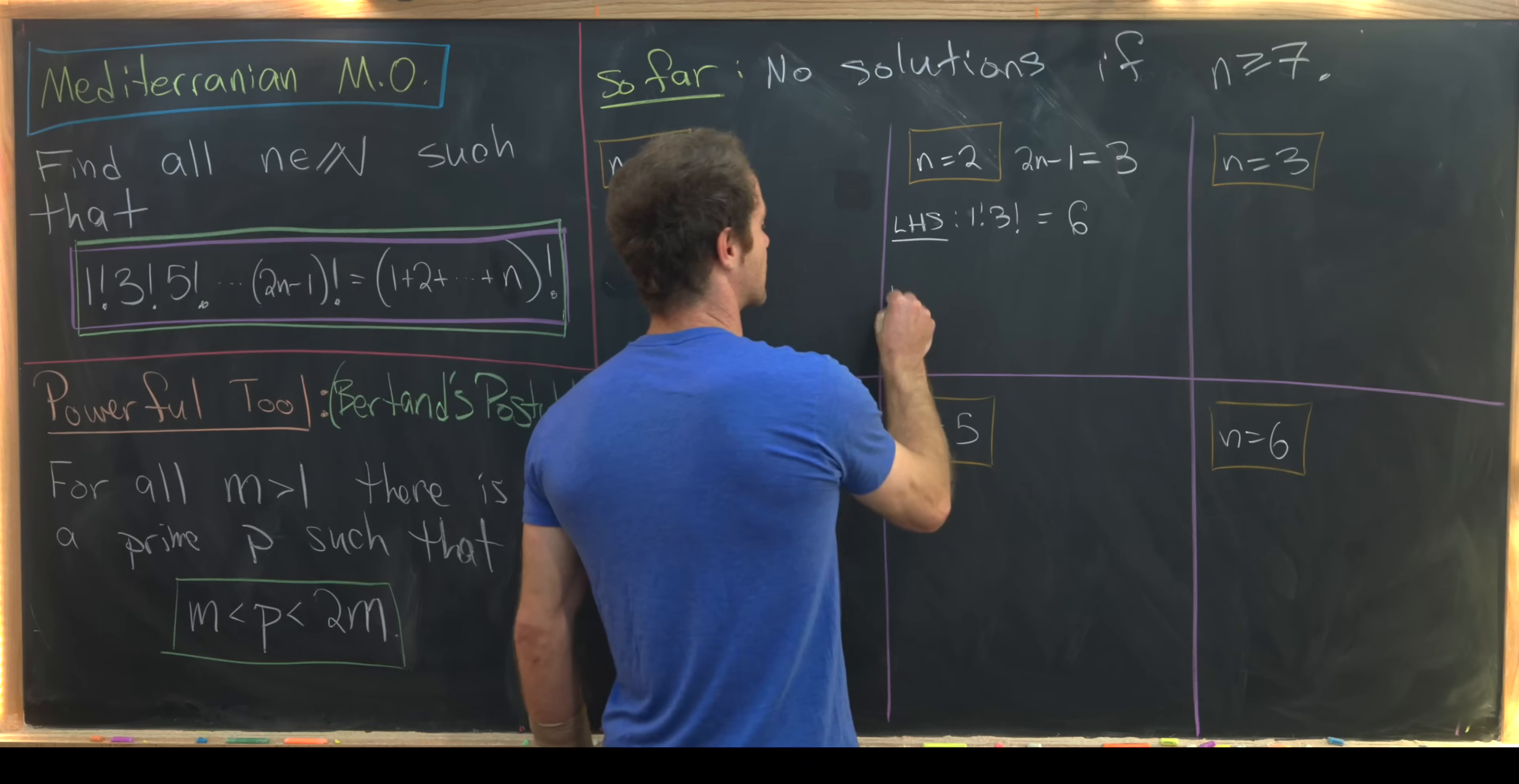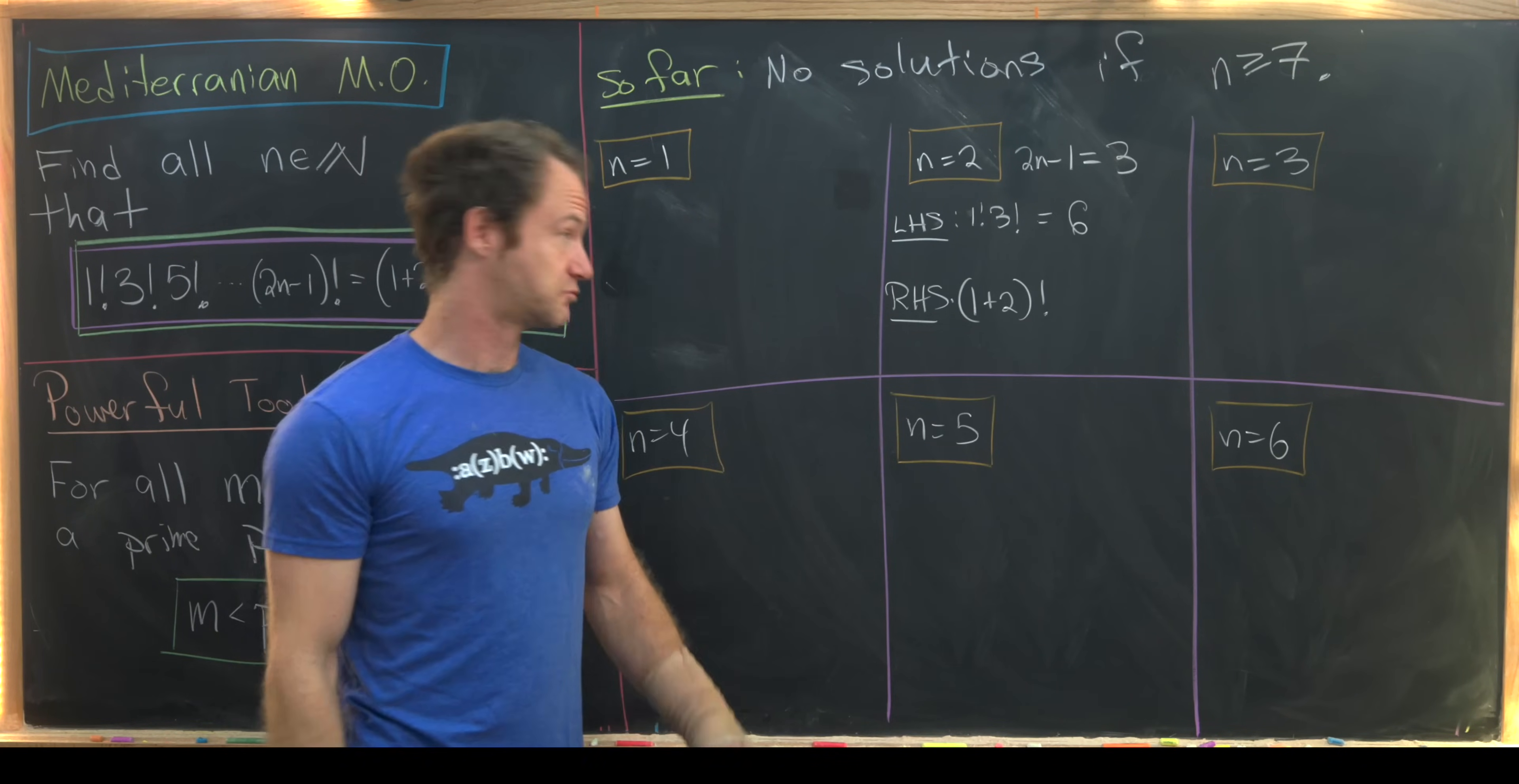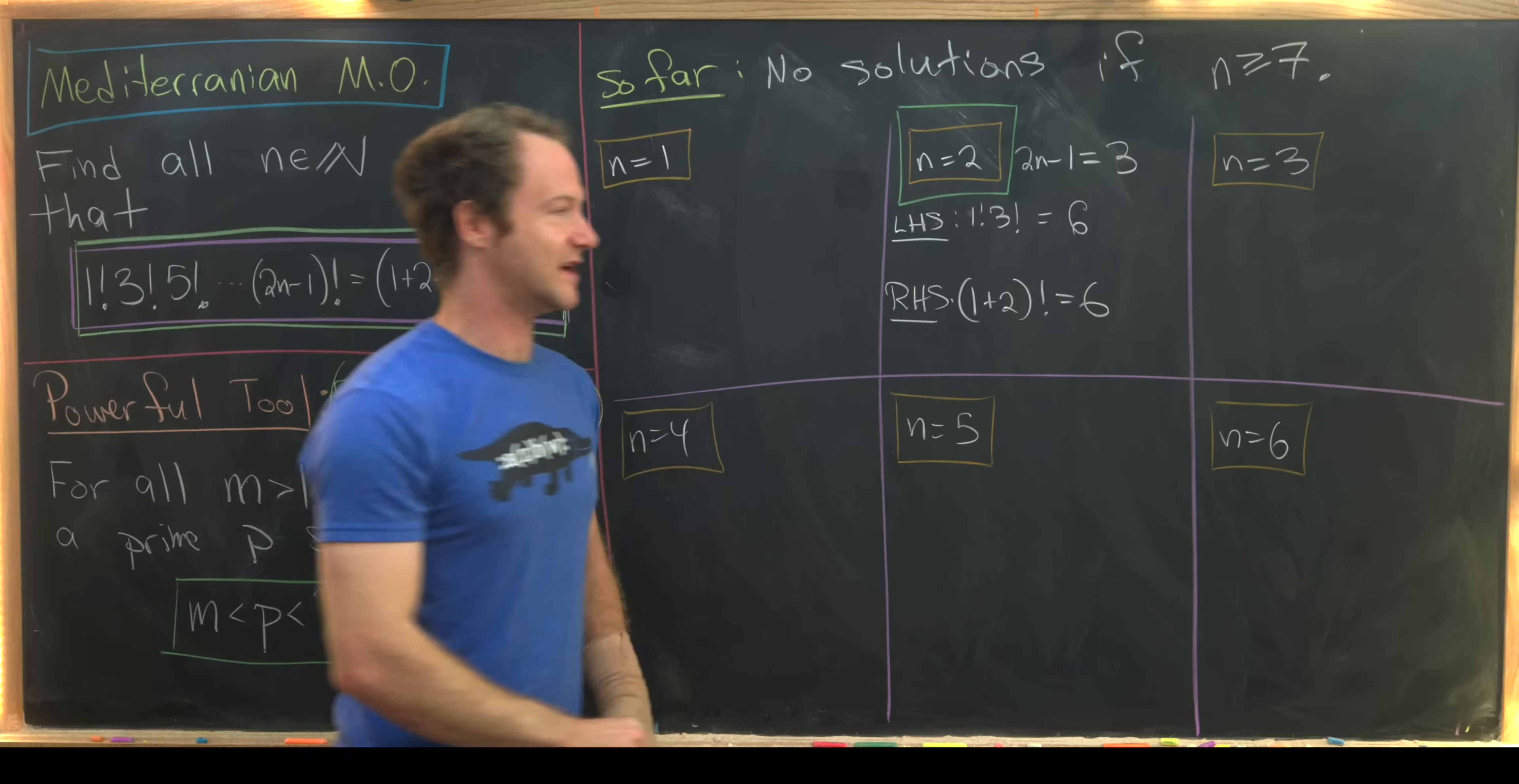And now our right-hand side will be the triangular number of 1 plus 2, and then take the factorial of that. But notice that 1 plus 2 is clearly equal to 3, factorial is 6. So that means we're good to go here. Let's box this in green to show that we have a solution.